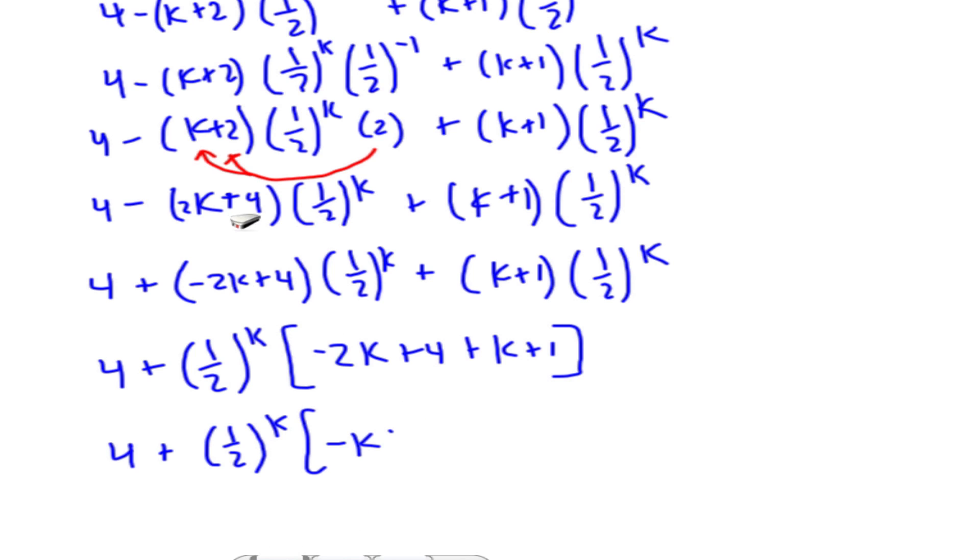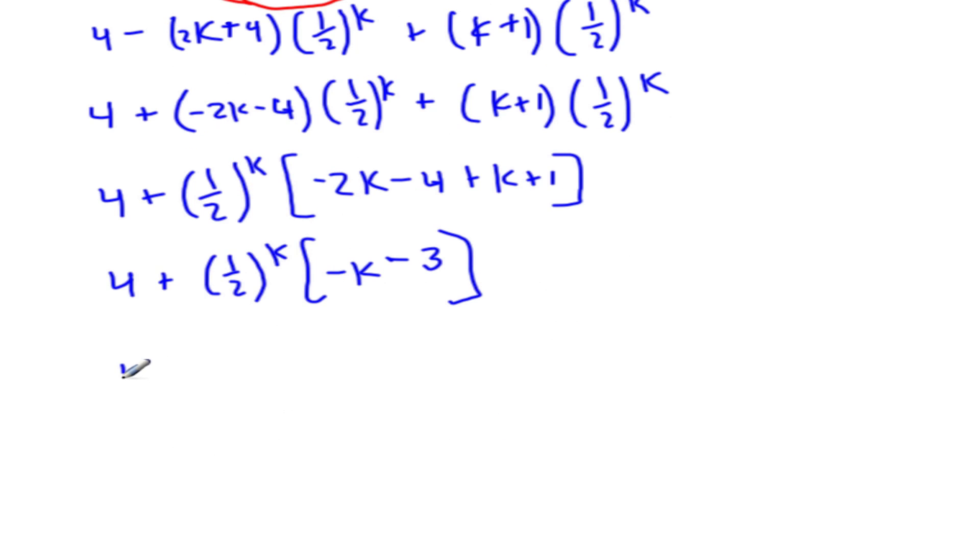And I have this plus k plus 1, and now I can simplify to minus k. Oh, sorry, I almost did it again. That should be a minus 4 right there. Minus 4, which means that this is a minus 4 here. I'm sorry for that. And so that's minus k minus 3, which obviously simplifies to take out the k and then put this term in front.